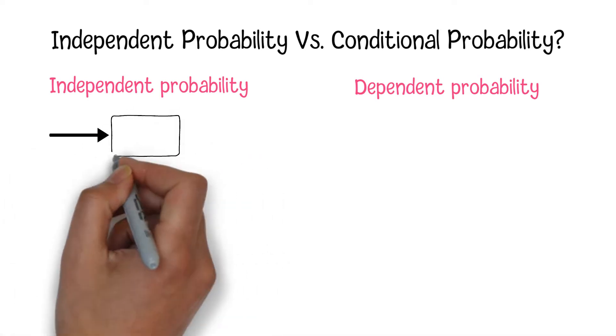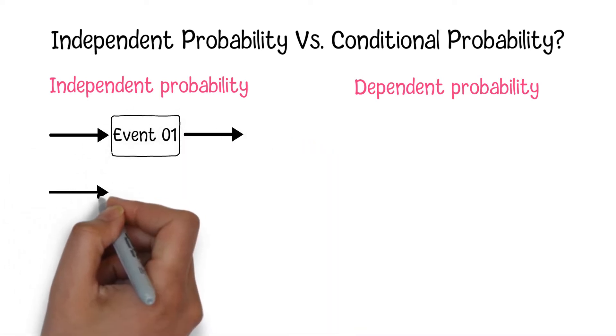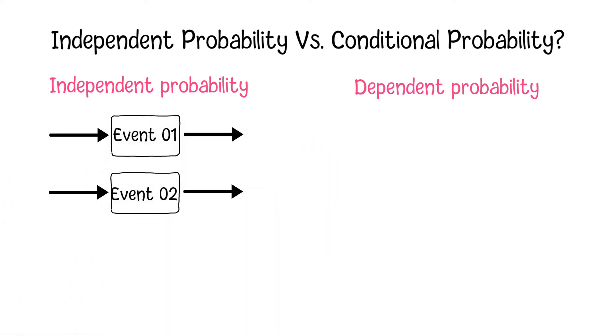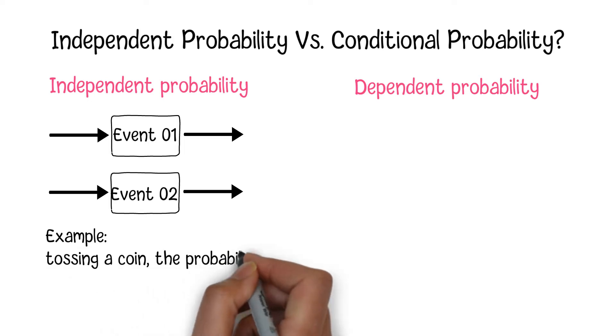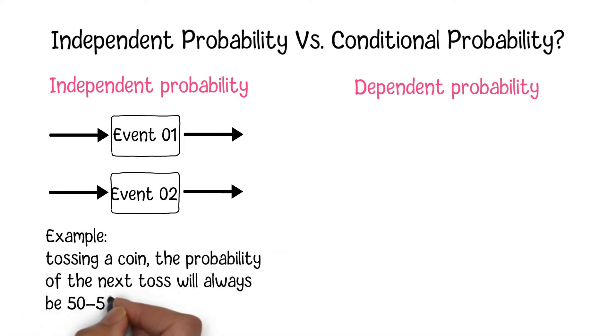Independent Probability indicates that the probability of an event is not affected or determined by any other events. This means the change of other events won't affect the probability of the independent events. A good example of Independent Probability is tossing a coin in which head and tail both have 50% Independent Probability. No matter what the past results are, the probability of the next toss will always be 50 to 50.